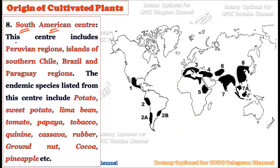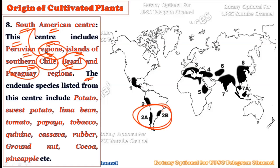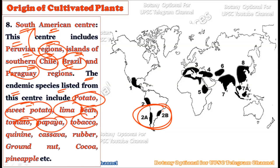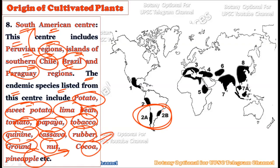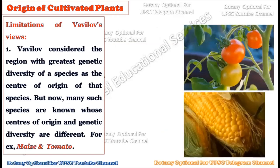The eighth and final center is the South American center, which includes the Peruvian region, islands of southern Chile, Brazil, and the Paraguay region. The endemic species from this center are potato, sweet potato, lima beans, tomato, papaya, tobacco, quinine, cassava, rubber, groundnut, cocoa, and pineapple. Cocoa, pineapple, and tobacco are typical examples of plants that originated in the South American subcontinent and later spread throughout the world.